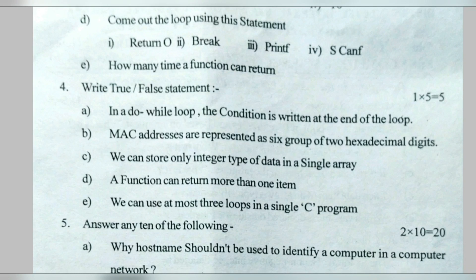Now true and false. In a do-while loop the condition is written at the end of the loop — it is true. MAC addresses are represented as six groups of two hexadecimal digits — it is true. We can store only integer type of data in a single array — it is false; we can also store character data.